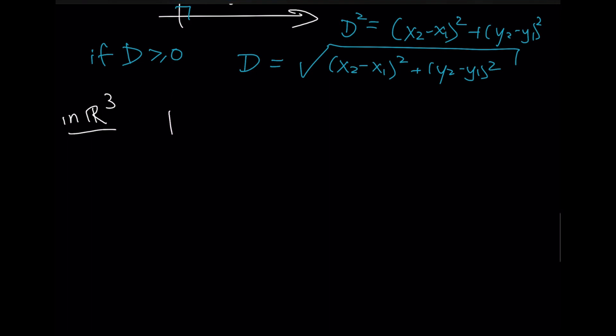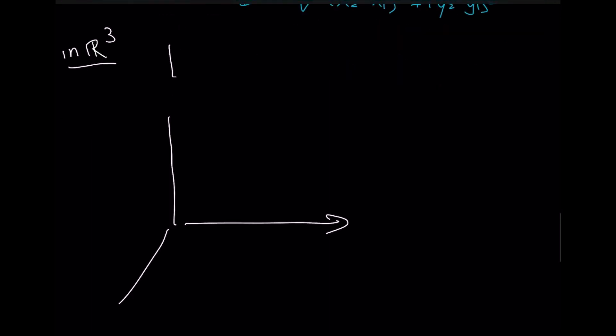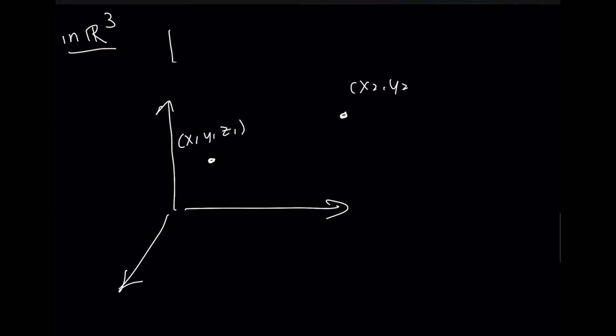In R3, you can draw a similar picture and come up with a similar result. If I give you two points, x1, y1, z1, x2, y2, z2, I'm interested in connecting them here with a line and I'm interested in this distance. You could imagine that these form some right triangle. We'll call this thing H and we'll call this thing L. d squared is H squared plus L squared.